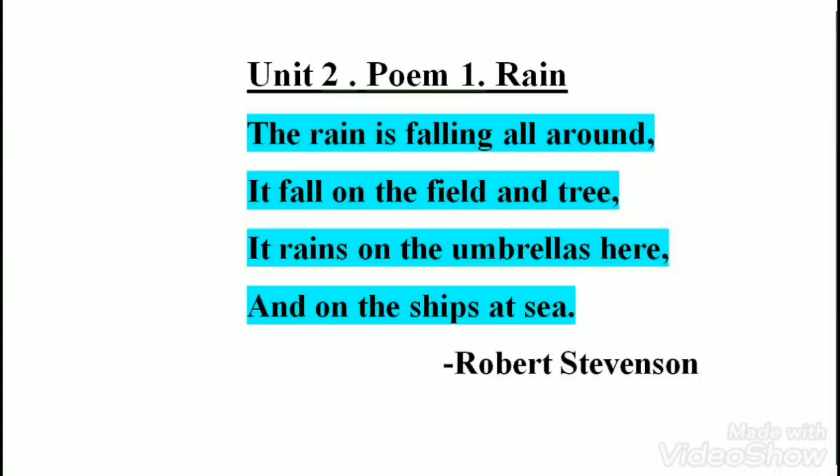English unit 2, poem 1: Rain. Let us read the whole poem first. The rain is falling all around. It falls on the field and tree. It rains on the umbrellas here and on the ships at sea. Poem written by Robert Stevenson.